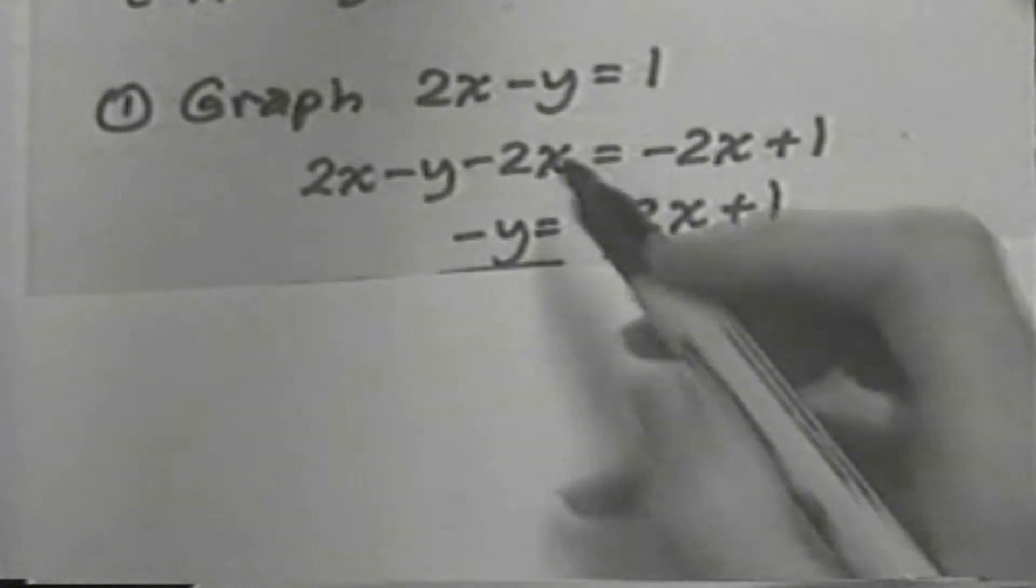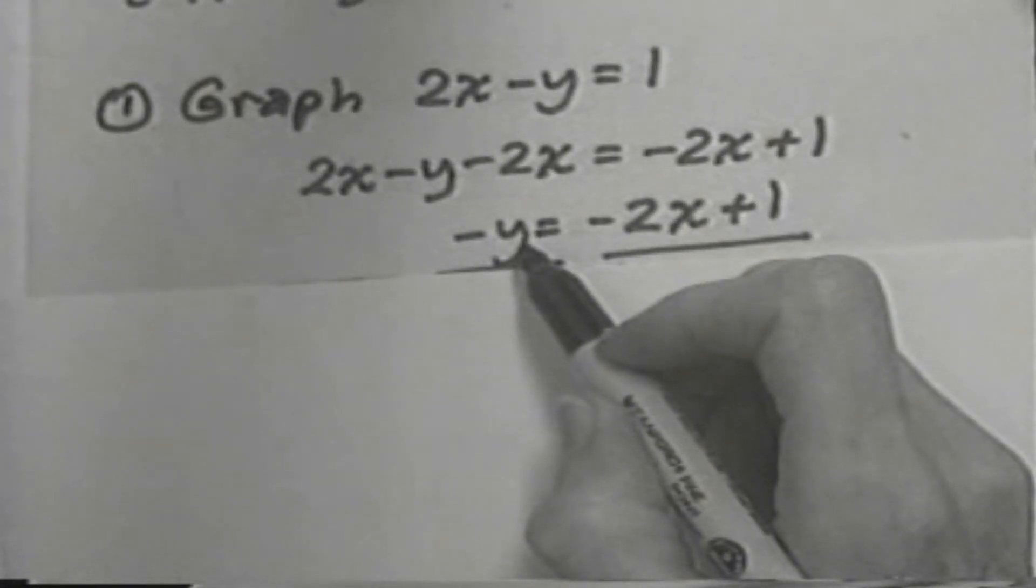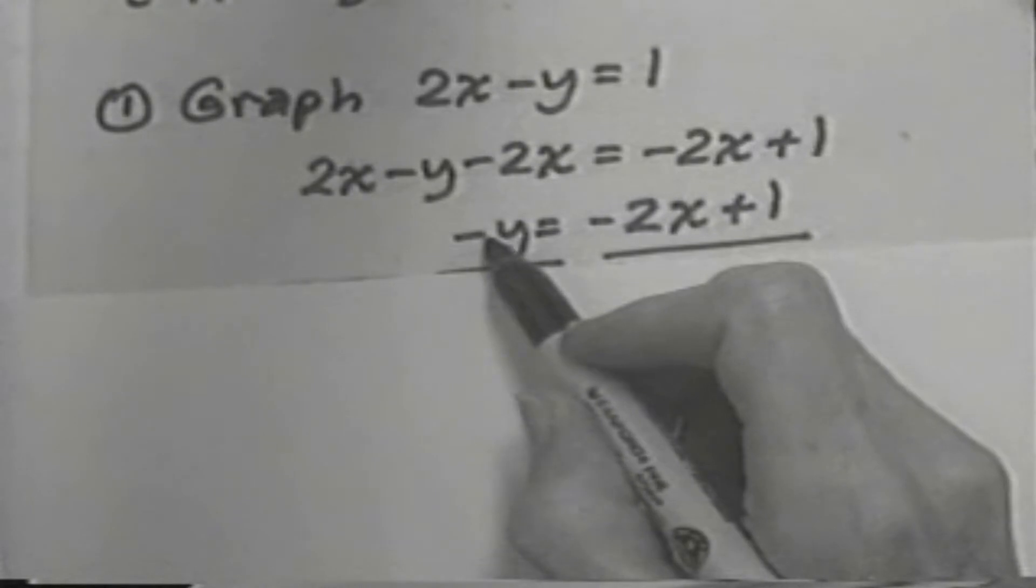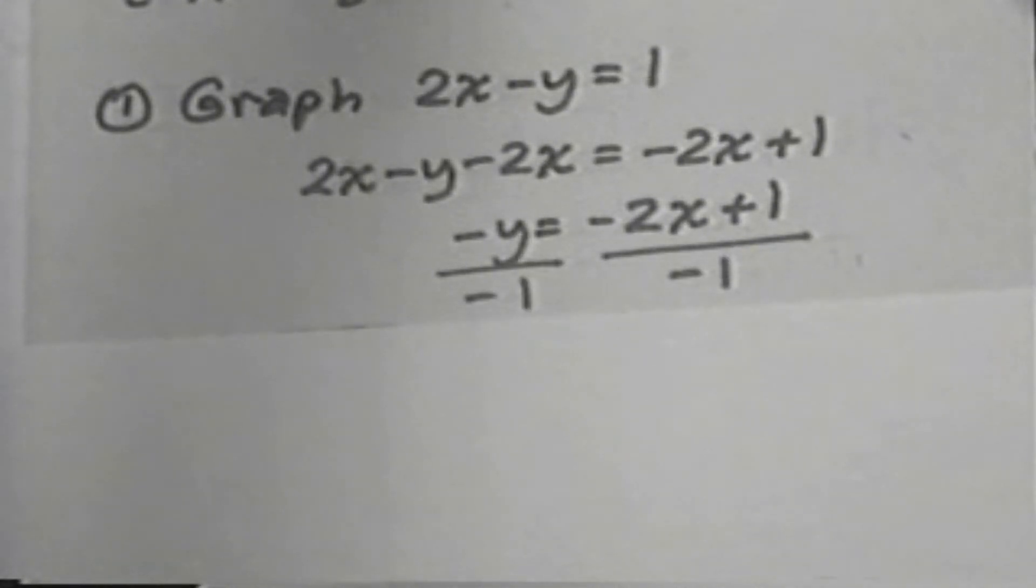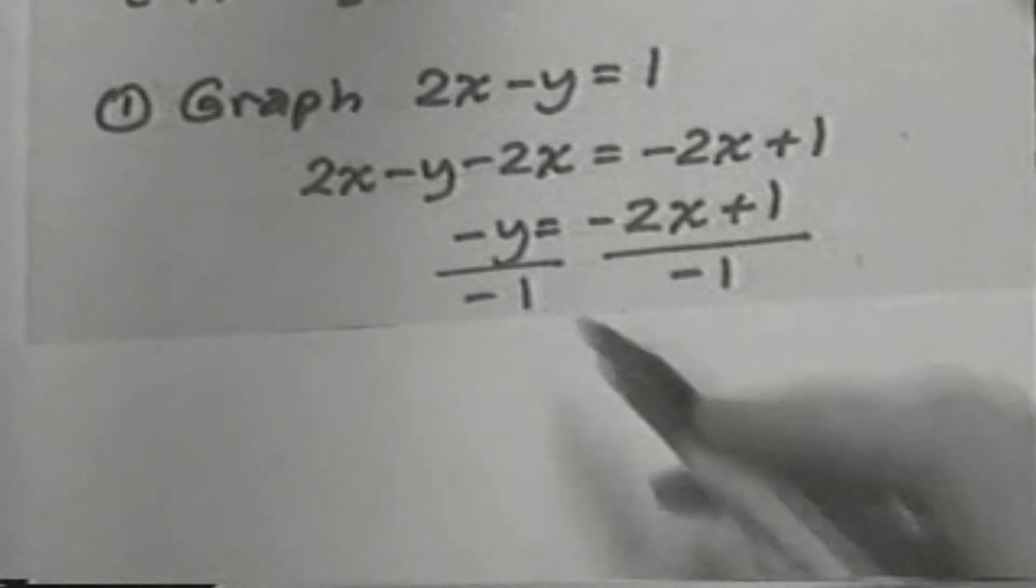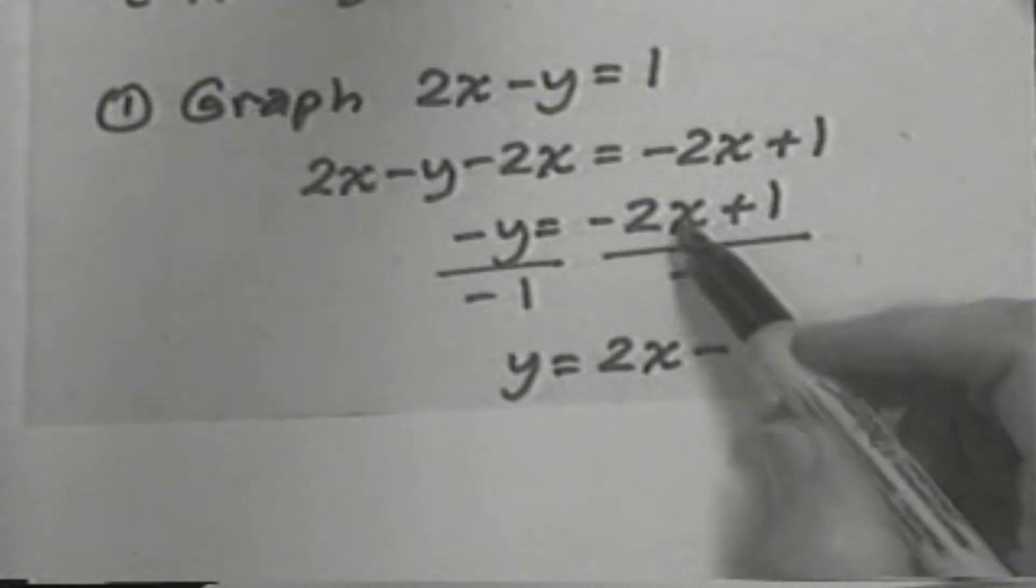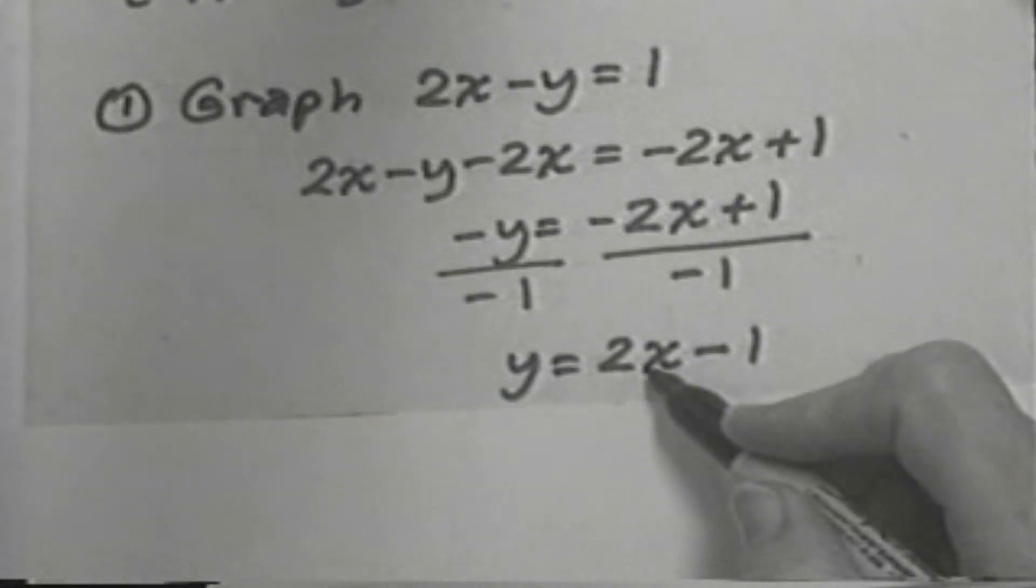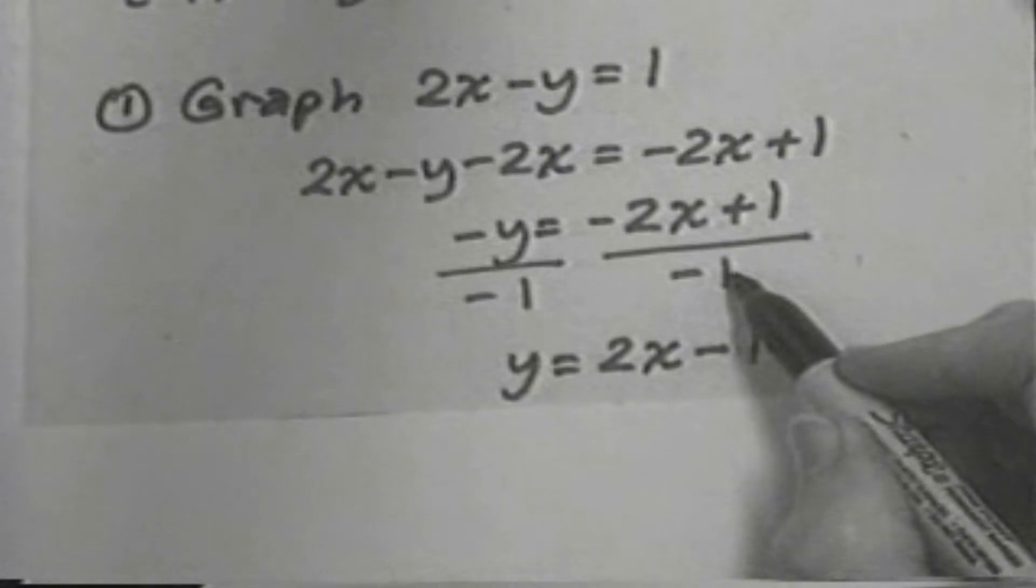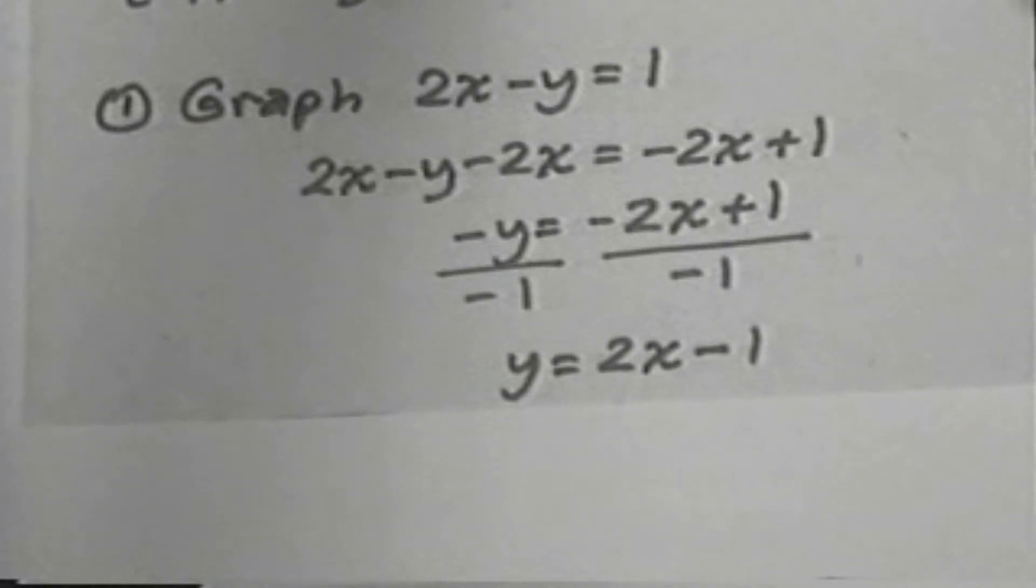We're solving for y. That means we must get y by itself. The understood coefficient of y is negative 1, so we divide both sides by negative 1. This gives us on the left y, and on the right, negative 2x divided by negative 1, which is 2x, and positive 1 divided by negative 1, which is negative 1. So we have y equals 2x minus 1.